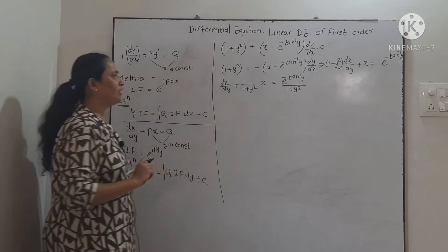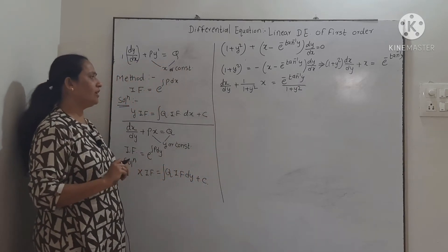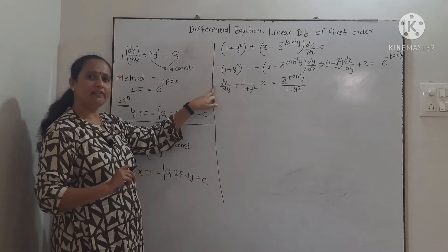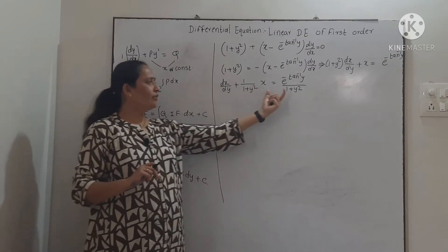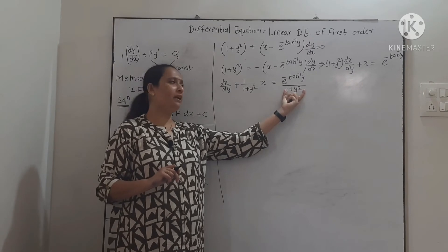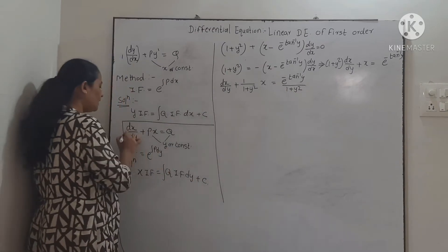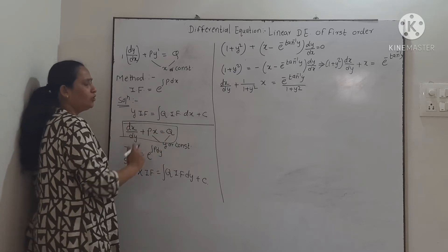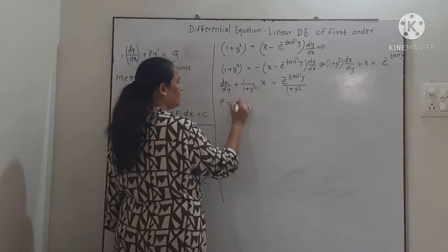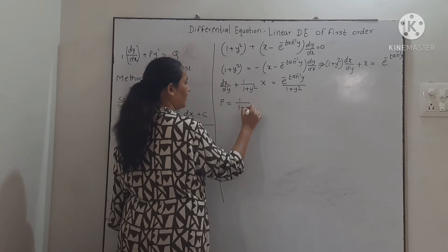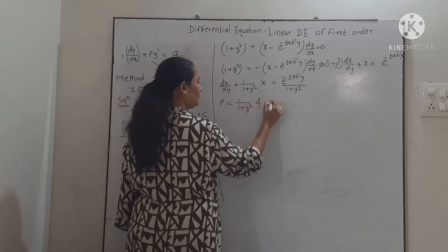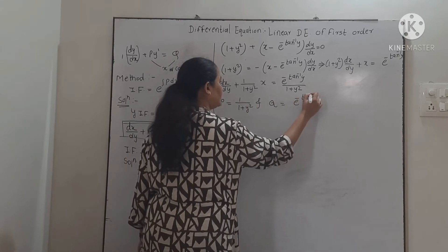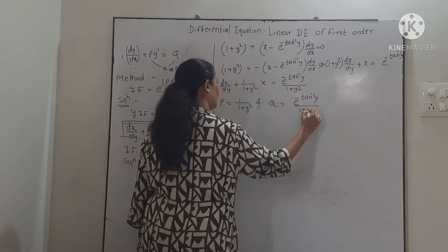This is linear in x. We can check all conditions: highest power of x is 1, coefficient of dx/dy is 1, degree is 1, and the right-hand side has only the independent variable. Comparing with dx/dy + Px = Q, we get P = 1/(1 + y²) and Q = e^(−tan⁻¹y) / (1 + y²).